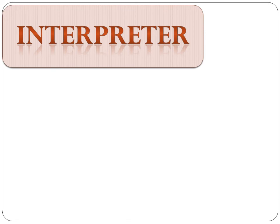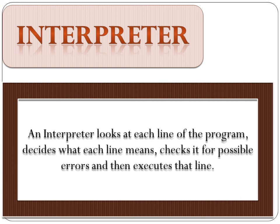Next is interpreter. This is the third type of translator. An interpreter looks at each line of the program, decides what each line means, checks it for possible errors, and then executes that line. It checks whether each written line is in the correct syntax or not, decides what each line means, checks for possible errors, detects them, and if possible also corrects them. After all this checking, that line is executed.